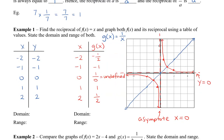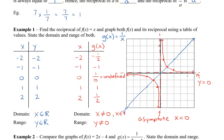Looking at the domain: for the line, we have all real numbers, and for the range, we also have all real numbers. However, for the domain of the reciprocal, we have all real numbers except x cannot equal 0. And for the range, we have all real numbers for y, except that y cannot equal 0.